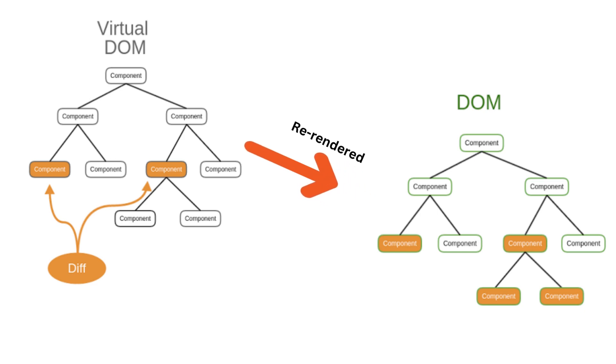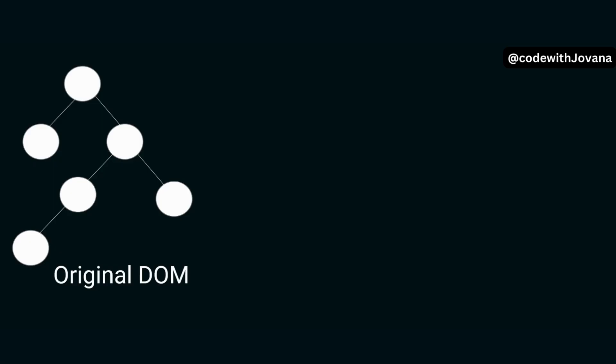Once React has identified the differences between the old and new virtual DOM trees, it calculates the most efficient way to update the actual DOM. React then updates the real DOM with the minimal set of changes necessary to reflect the updated UI.